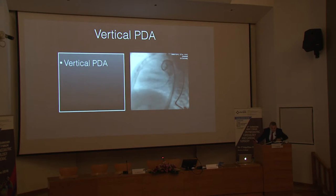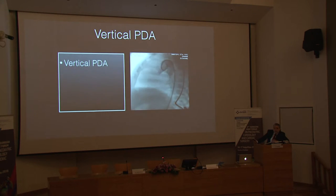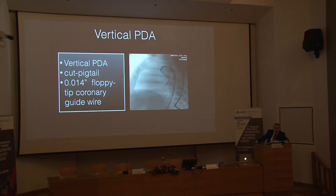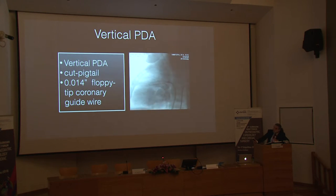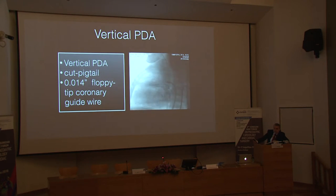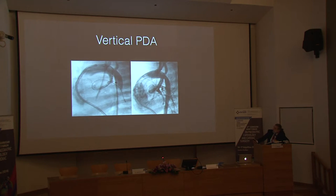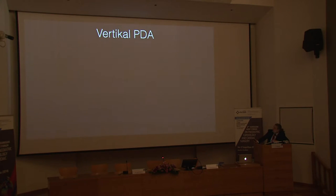The most difficult PDAs are the vertical type, typically found in VSD with tetralogy of Fallot and VSD with pulmonary atresia. Some are less tortuous with fewer than two bends and are amenable to stenting — a cut pigtail catheter works well from the arterial approach. These stents typically last about six months, so redilation is needed, and using a larger stent initially can sometimes cause increased pulmonary blood flow requiring diuretics. In some vertical PDA cases, a venous route through the VSD into the ascending aorta provides an easier angle for stent and guide wire delivery.